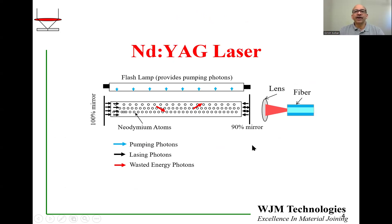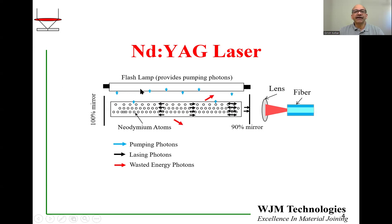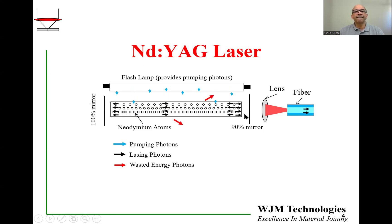On this slide I'm going to show you how the lasing process works in an animated form. Here again we have the flash lamp. The light coming out from the flash lamp is shown in blue. The lasing photons are shown in black, and the red photons are the ones which go in the wrong direction and are wasted. The pumping photons are produced by the lamp, the black photons go back and forth and get multiplied. When they reach the output mirror, 10% of the output goes out and is conducted through a fiber, while 90% is reflected back and gets multiplied. This is the animation of a typical YAG laser.